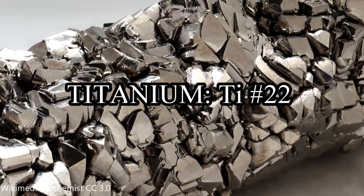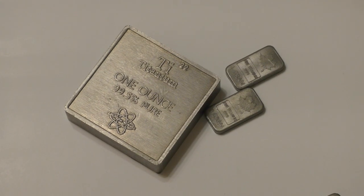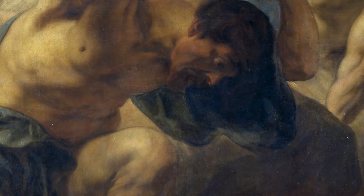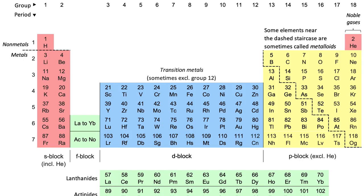Titanium was discovered by William Greger in Cornwall, Great Britain. Titanium was named after the Titans in Greek mythology. The metal is located in the transitional metals of the periodic table under Group 4 and Period 4.